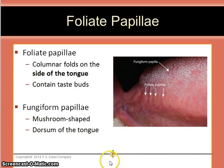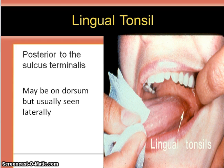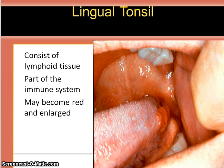The lingual tonsil is found posterior to the sulcus terminalis. They may be found on the dorsum of the tongue, but usually they are seen laterally. Lingual tonsils consist of lymphoid tissue and they are part of the immune system. They may become red and enlarged, as you see here.